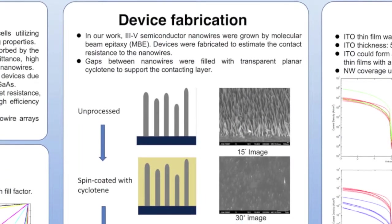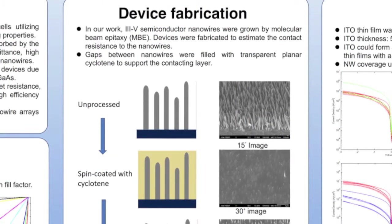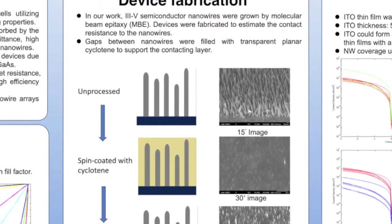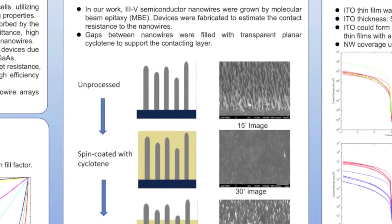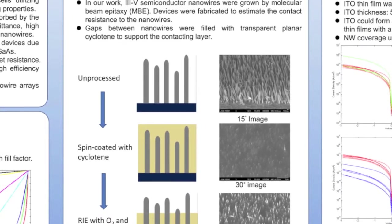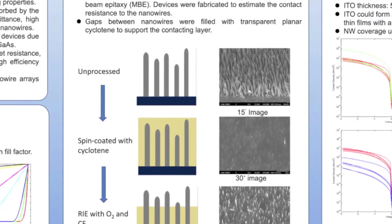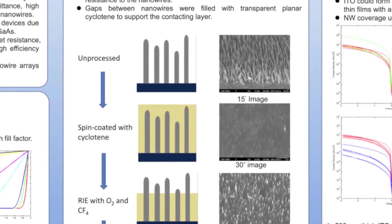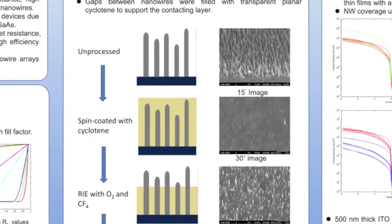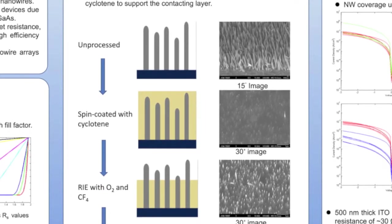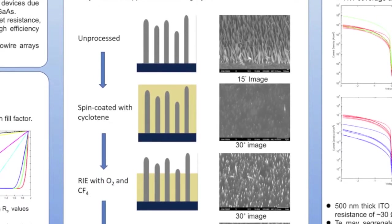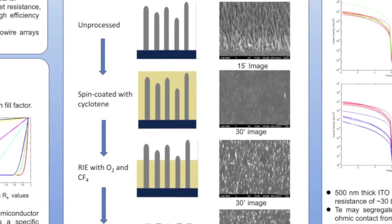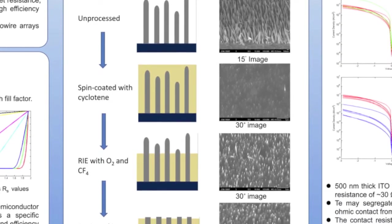The way we fabricate the device is we spin-coated a cyclotene layer on our nanowires to support the planar contact. The second step is, because we want to contact as many nanowires as possible, we etched it back with oxygen CF4 in our system.